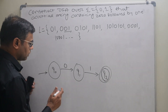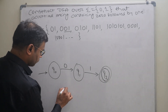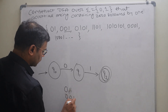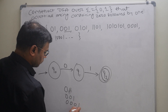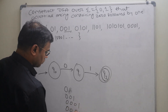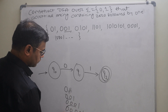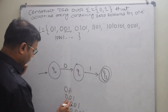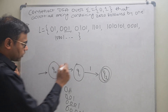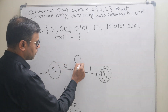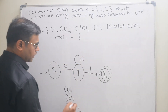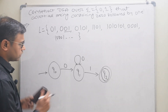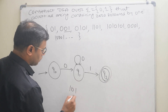Next, the string can start with multiple zeros, such as 001, 0001, 00001, and so on — any number of zeros. So what we can do is apply a self-loop on zero at q0, so that it will accept any number of leading zeros. This is the first possibility.